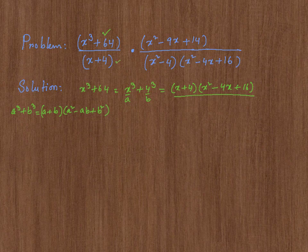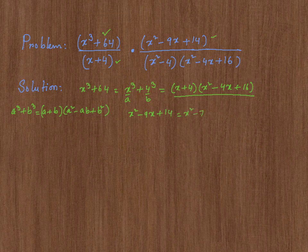Then, this cannot be factored. However, this can be factored. So let me show you how. x squared minus 9x plus 14, which is x squared minus 7x minus 2x plus 14.